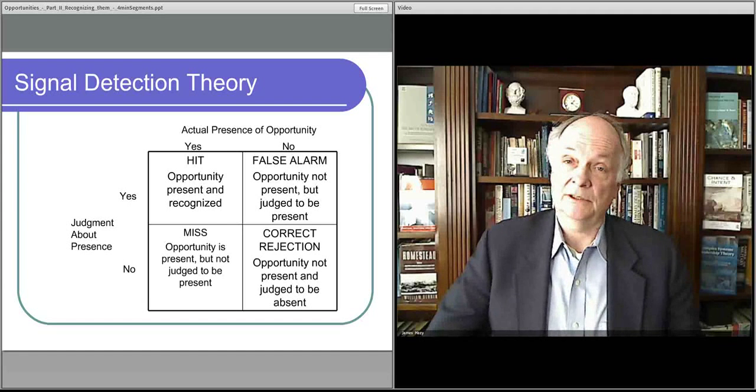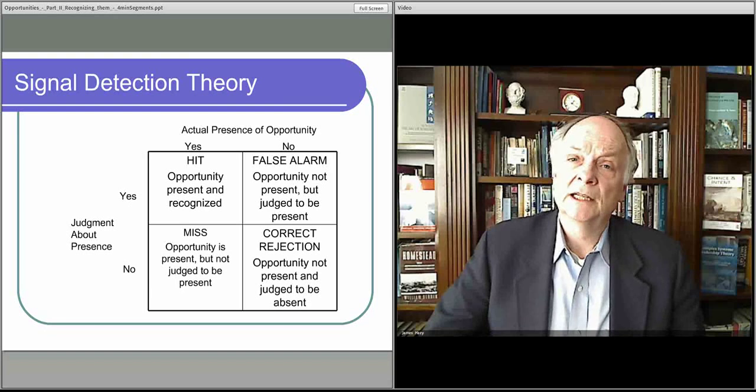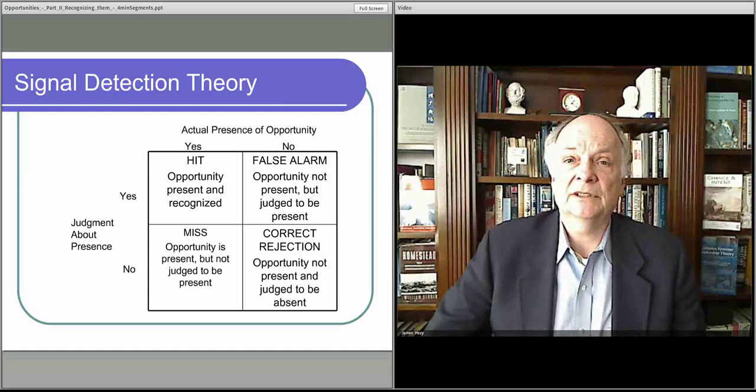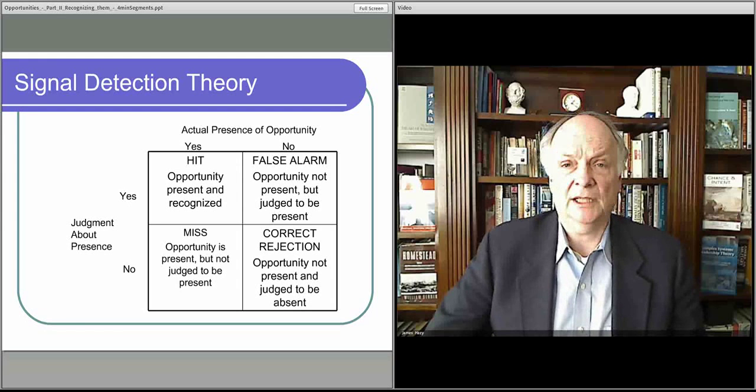The other possibility is that there's an opportunity out there, but you don't see it. You just don't see the opportunity. That's the bottom left-hand corner, the miss box.